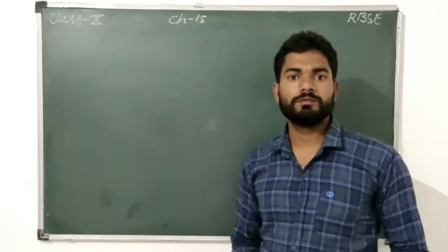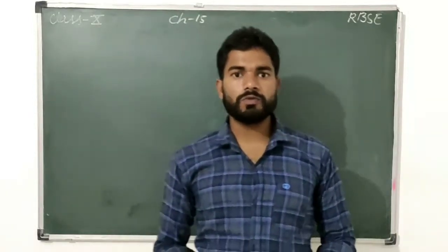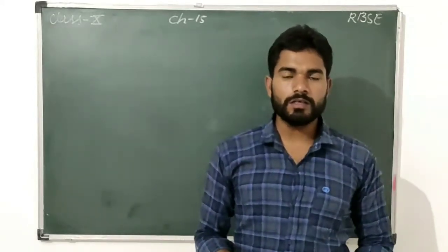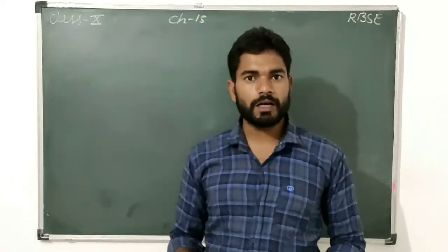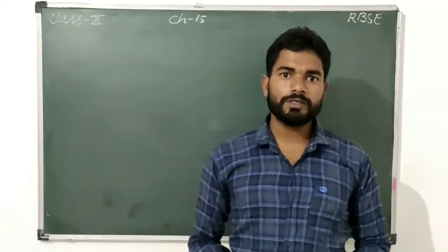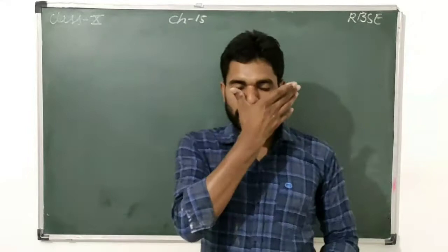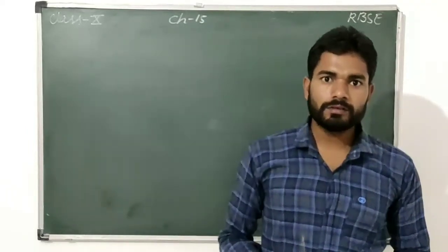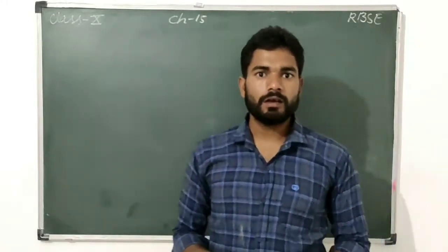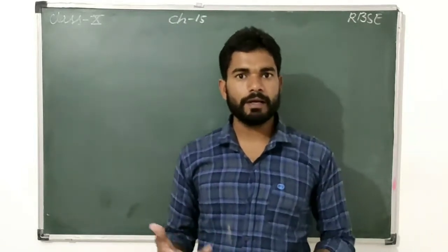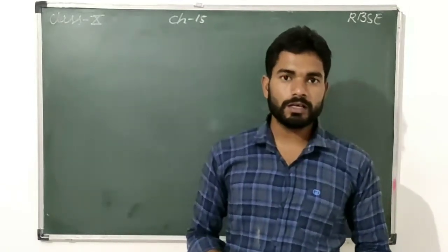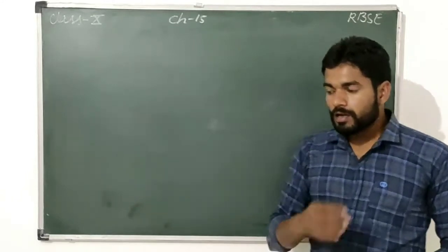Hello everybody. In today's video we are going to start a new chapter based on mensuration — it is chapter number 50 of the RBS syllabus. It is based on the area of circle and other categories related to the circle, like segments. This chapter is completely based on two-dimensional theory.